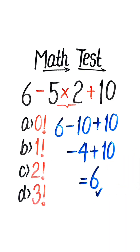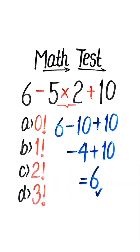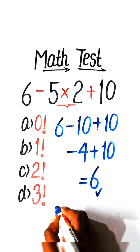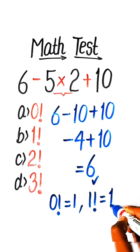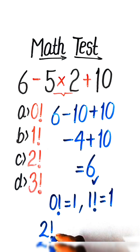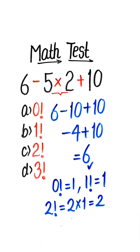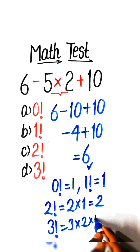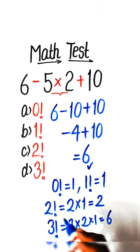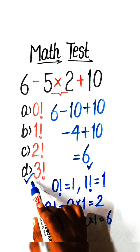The correct answer is 6, but in the options we have all values in factorial. The value of 0 factorial is 1, 1 factorial is 1, 2 factorial is 2 multiplied by 1 equals 2, and 3 factorial is 3 multiplied by 2 multiplied by 1 equals 6. So Option D: 3 factorial, with a value of 6, is the correct answer.